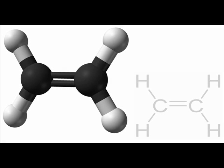Hi, I'm Dr. Dave. Ethylene is the chemical compound with the formula C2H4. It is the simplest alkene because it contains a carbon-carbon double bond. Ethylene is called an unsaturated hydrocarbon or an olefin.